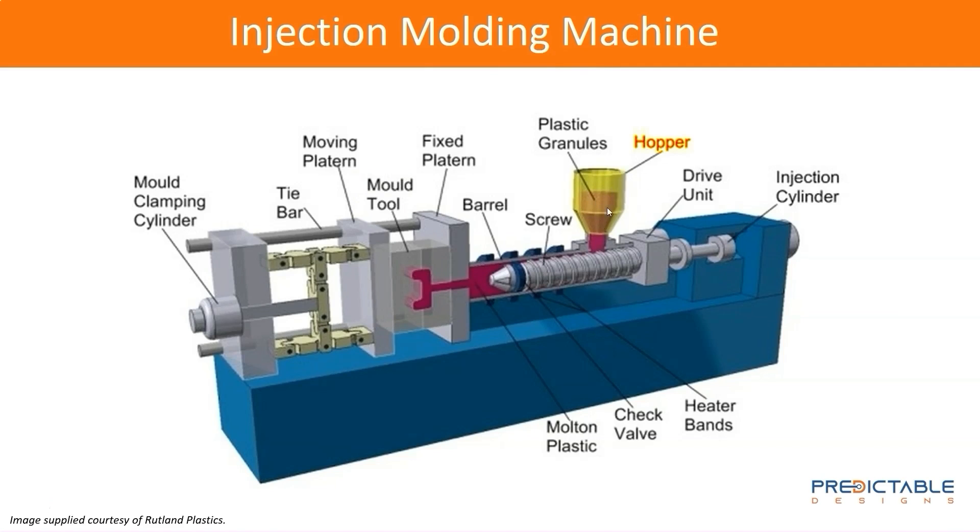Basically, you have this hopper where the plastic pellets go in. They go down into this screw mechanism, and there's a heater in here that melts the plastic. Then this screw is turned, driving the molten plastic into the enclosure through a gate. The gate on the mold is where the plastic is actually injected into the cavity of the mold. The plastic is driven by this screw, which creates the pressure, hence the name high-pressure injection molding.